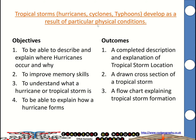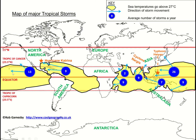They occur as a result of particular physical conditions, which we'll have a look at now. You can see a distribution map there. The yellow areas represent sea temperatures going above 27 degrees Celsius, which is a key background physical condition for a tropical storm to form. That's why they tend to occur between the tropics of Cancer and Capricorn. Some do spill out into slightly shallower ocean waters, slightly outside of that band, but the sea temperature has to be heated to quite significant depth as well.